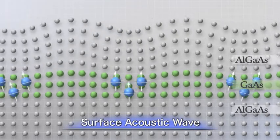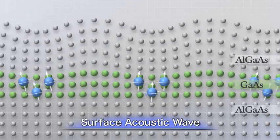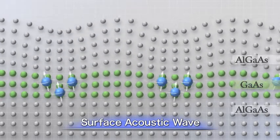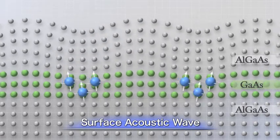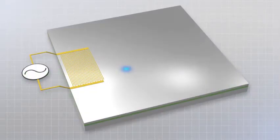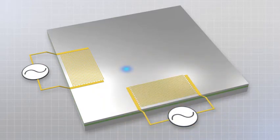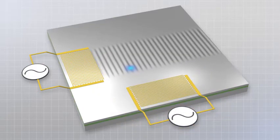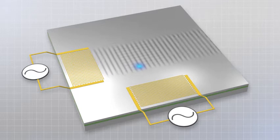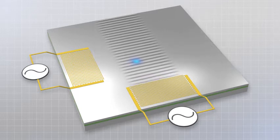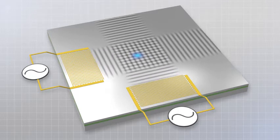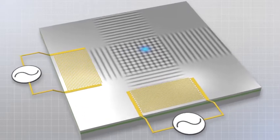The electrons move by riding on these surface acoustic waves. If ultrasonic wave generating circuits are positioned in opposing directions, it is possible to control the movement of electrons. We successfully arranged the electron spin within the semiconductor to control the movement.